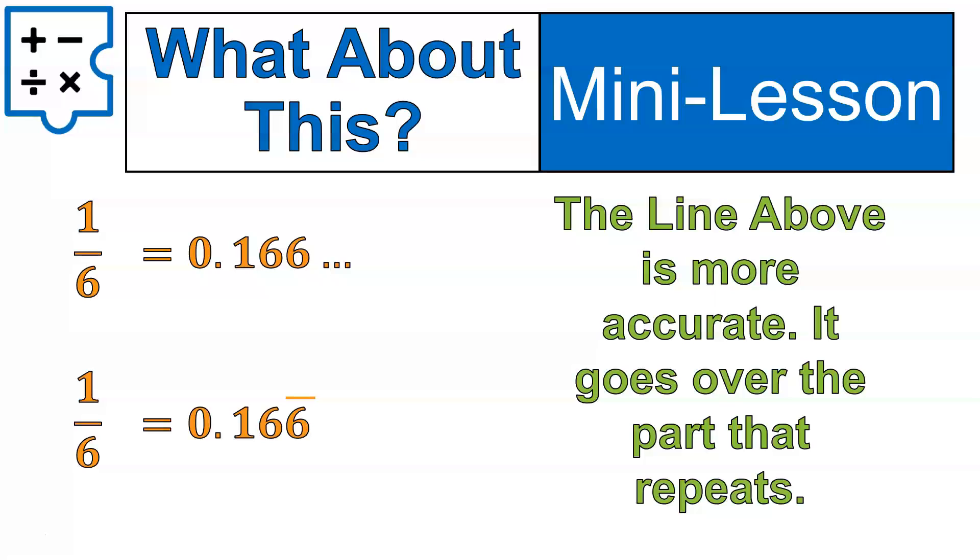So you can see in the first example, 0.166 dot, dot could mean 166, 166, 166 repeating, but you can tell in the second example that it's the six that repeats. So it would be 0.16, and then the sixes keep going, so 6, 6, 6, 6, 6, 6, and on and on and on, and you'll get a repeating six forever. The one only appears one time, and that's why I prefer the line being above. It shows you exactly which part is repeating.